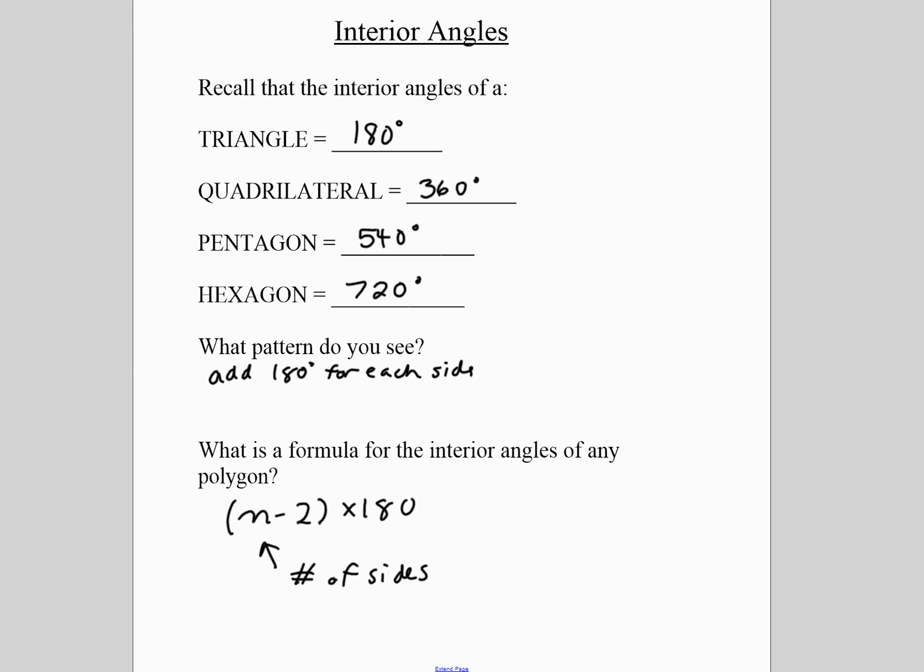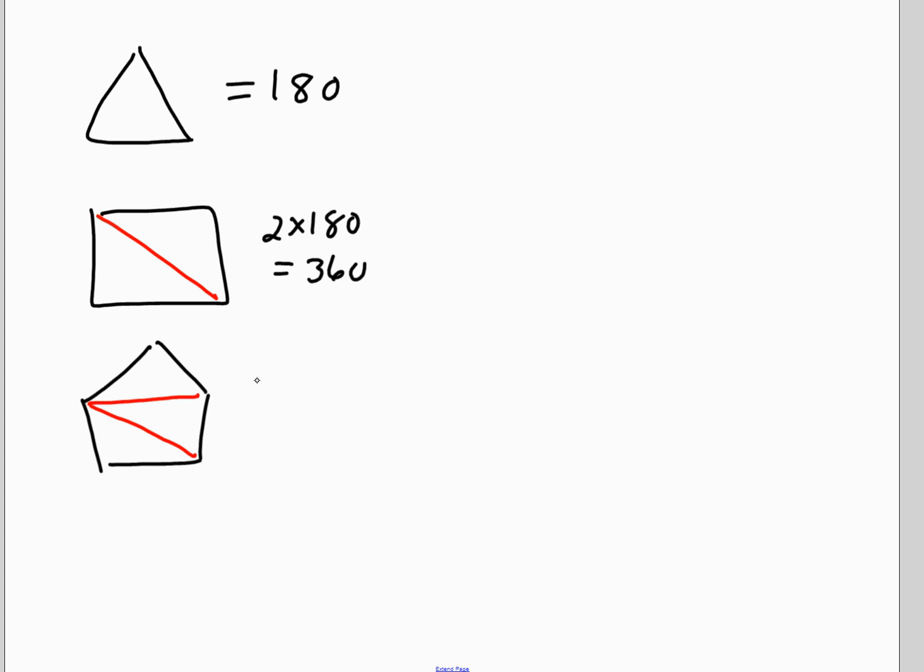If you recall from last year, the reason why this happened was a triangle, you can form one triangle, and triangles add up to 180. A quadrilateral, the minimum number of triangles that you can form is 2 triangles, so 2 triangles is 360. A pentagon, the minimum number of triangles you can form is 3, and 3 times 180 is 540.